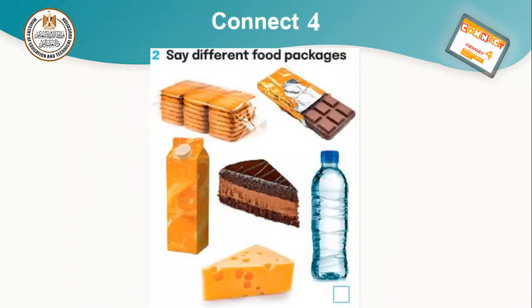We have: a bottle of water, a bar of chocolate, a piece of cake, a piece of cheese, a carton of juice, and a packet of cookies. A packet of cookies, a bar of chocolate, a carton of juice, a piece of cake, a bottle of water, and a piece of cheese.